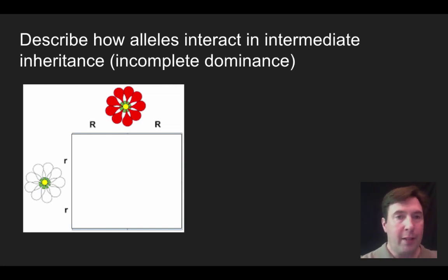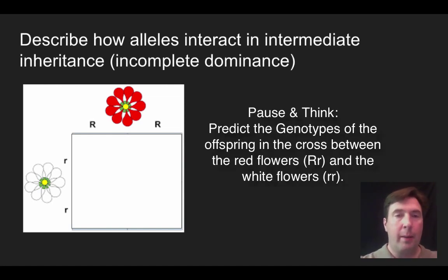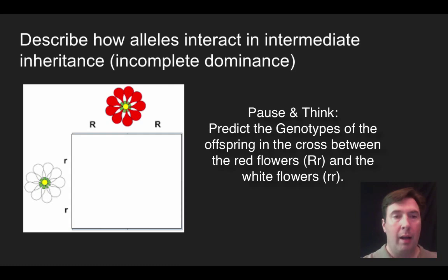The first thing I'm going to ask you to do is pause and think. I'd like you to predict the genotypes that you would get in the cross between this red flower that is big R, big R, and the white flower that is little r, little r. So all I want you to do is come up with the genotypes you would get from this. Pause and think.